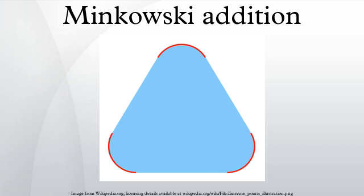If one polygon is convex and another is not, the complexity of their Minkowski sum is O(nm). If both of them are non-convex, their Minkowski sum complexity is O(m²n²).